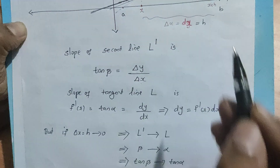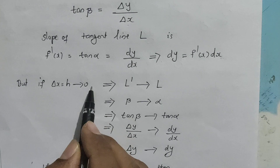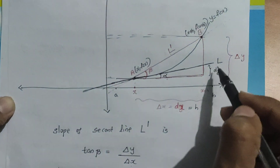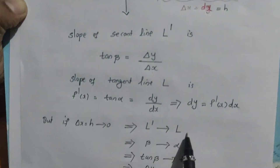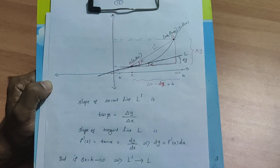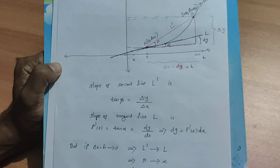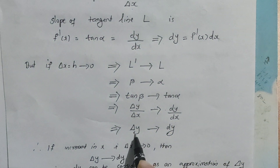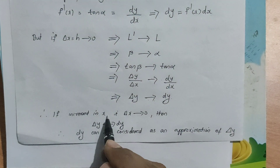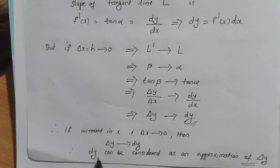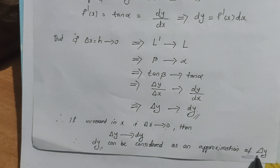As delta X equals h tends to 0, the secant line L dash approaches the tangent line L, and angle beta tends to alpha. So tan beta, which is delta Y over delta X, tends to tan alpha, which is dy over dx. Since delta X and dx are the same, delta Y tends to dy. Therefore dy is an approximate value of delta Y — dy is called the differential and delta Y is the increment in the dependent variable.